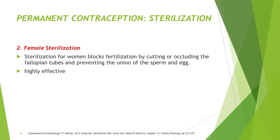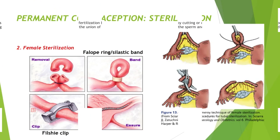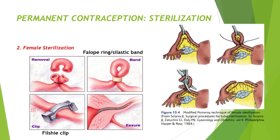For female sterilization, the fallopian tubes are cut or occluded to block fertilization and prevent the union of sperm and egg. This is highly effective. Female sterilization can be performed laparoscopically, via exploratory laparotomy, mini-laparotomy, or by hysteroscopy. For bilateral tubal ligation by laparotomy, a modified Pomeroy technique can be used, or a fallopian ring or Filshie clip can be placed. Hysteroscopically, an Essure ring can be inserted through the tubal ostia of the uterus.